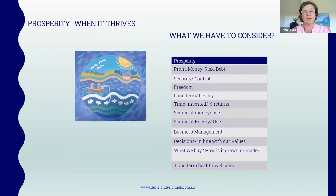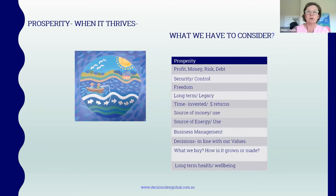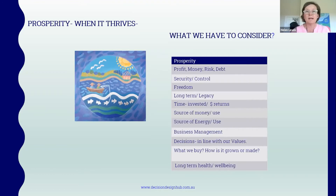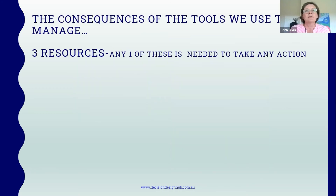The third area is prosperity. When it thrives, we consider: profit, money, risk, debt, security, control, freedom, long-term legacy, time invested, money returns, source of money, use of money, source of energy, use of energy, business management decisions in line with our values, what we buy, how it's grown or made, and long-term health and well-being. Prosperity encompasses more than just money — it's about our legacy, the longer-term consequences, and what we're growing while we operate and live as part of the earth's community.